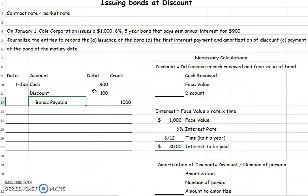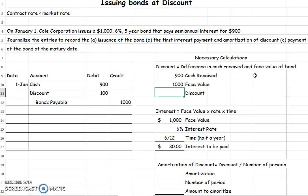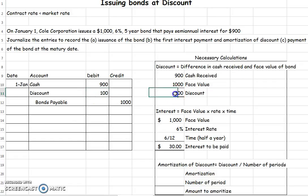Let's calculate the discount — that's the difference in cash received. We received $900, the face value was $1,000, so the discount was $100. We can see it right there. It shows up as a negative in the way I've set it up, but if it were positive it would be a premium; negative means it's a discount.